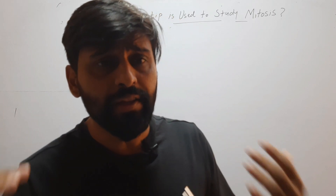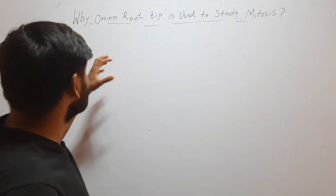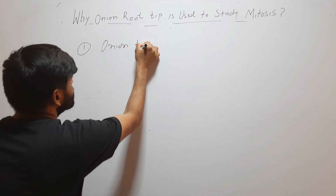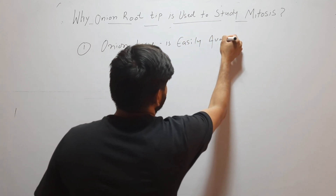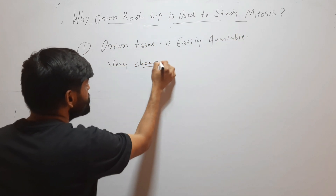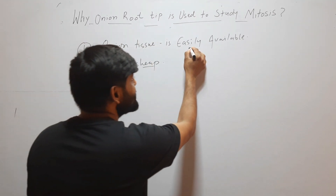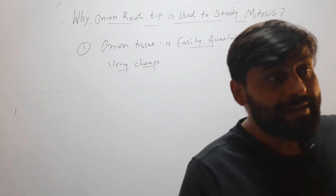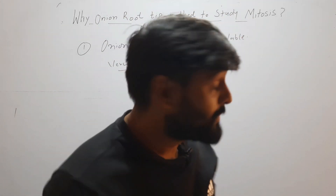Hello friends, welcome to my YouTube channel. In this video we will discuss why onion root tip is used to study mitosis. Onion root tip is used to study mitosis because onion tissue is easily available and very cheap. This is the first reason. You will find onion everywhere, and you simply have to take onion and dip it into water — its roots will come out and you have the tissue.